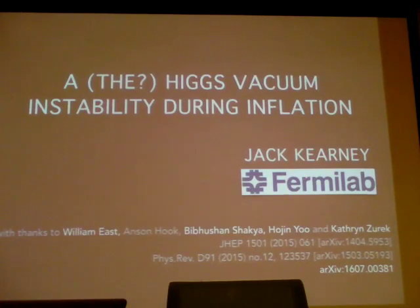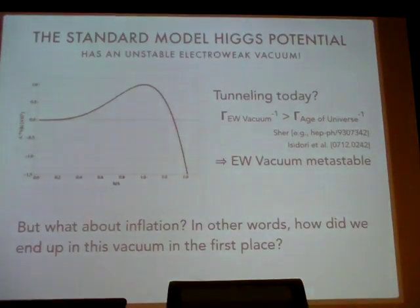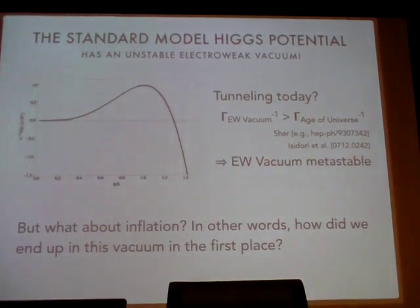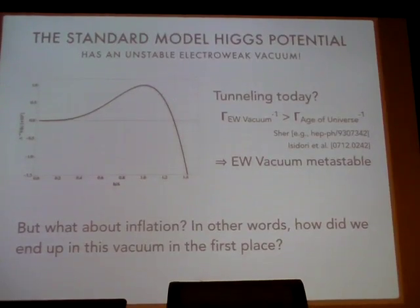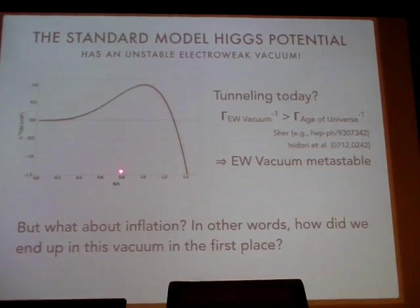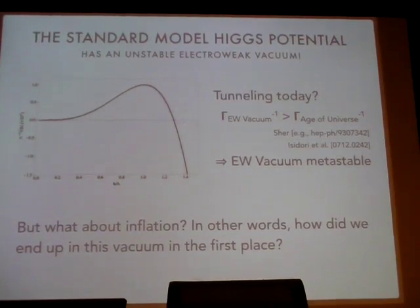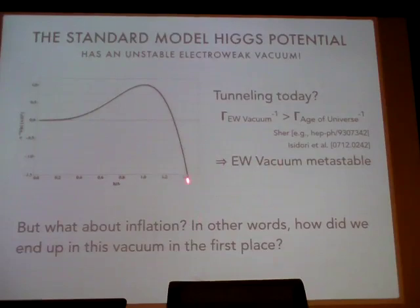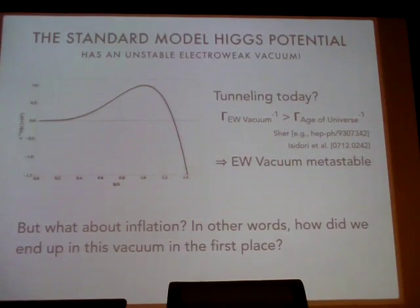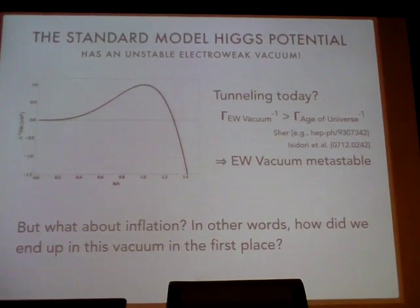I'm going to talk about the instability in the standard model Higgs potential, which everyone is quite familiar with. The idea is that if you calculate the Higgs potential within the standard model, you find that the electroweak vacuum, somewhere way down here, is not actually a global minimum of the potential — it's only a local minimum. The potential turns over and runs away to some true vacuum, presumably at around the Planck scale.